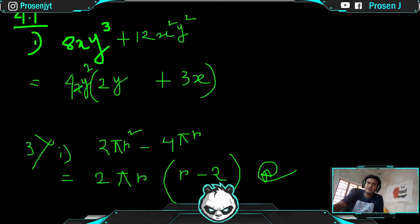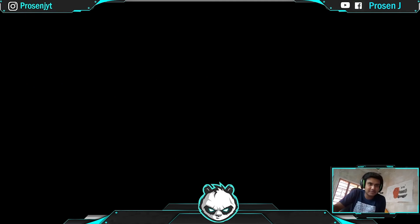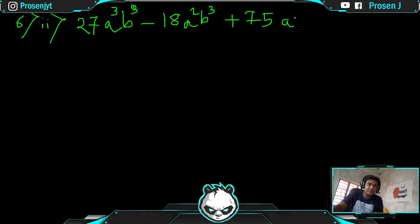Let me do a bit difficult one now. I'll choose a hard one. Let's do part six, number two, so you can practice with cubes. In six part two, the sum is 27a³b³ - 18a²b² + 75a²b².